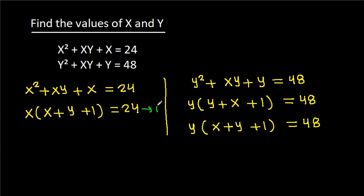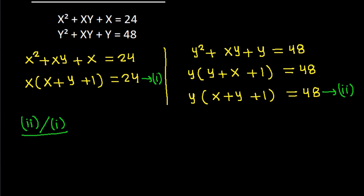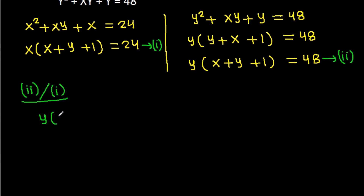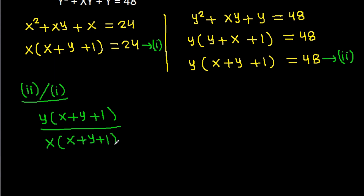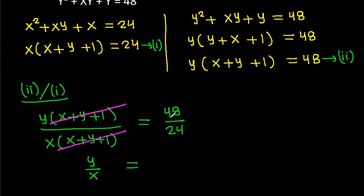Suppose this is equation 1 and this is equation 2. If we divide equation 2 by equation 1, then y times (x plus y plus 1) divided by x times (x plus y plus 1) equals 48 by 24. The (x plus y plus 1) cancels, so y divided by x equals 2, meaning y equals 2x.